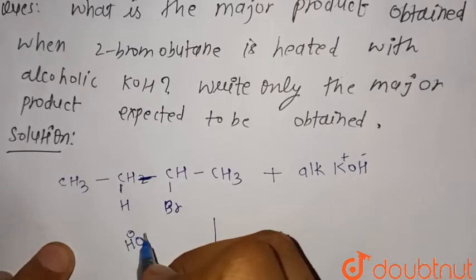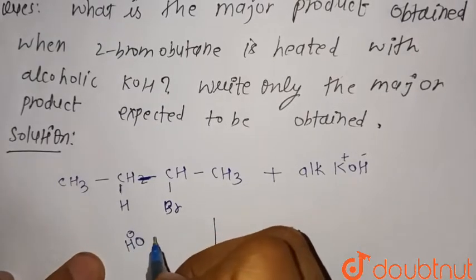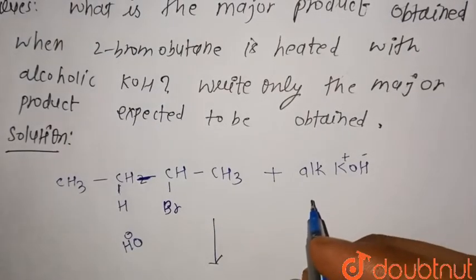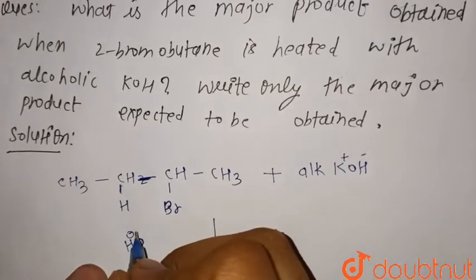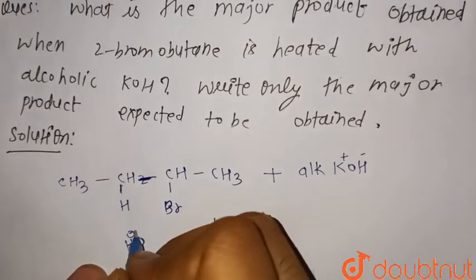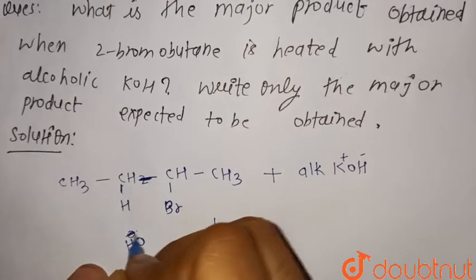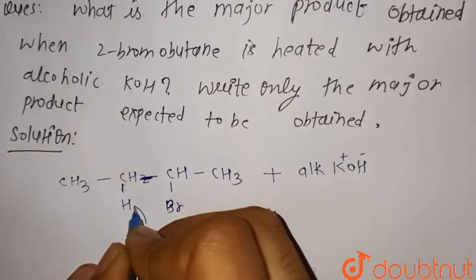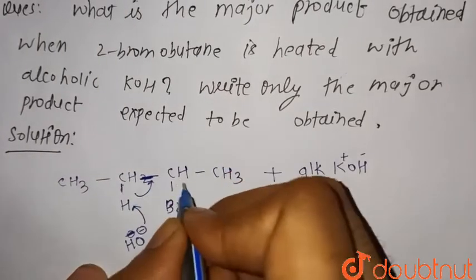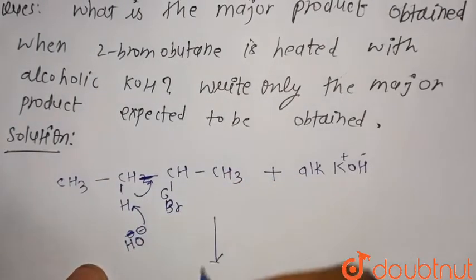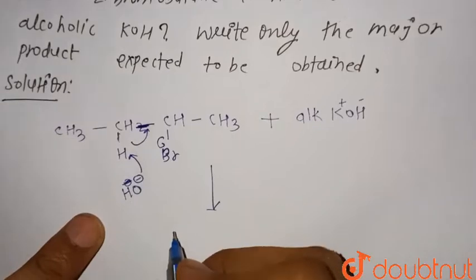The OH- released from alcoholic KOH takes this hydrogen, and this goes here while Br- leaves, forming the product.